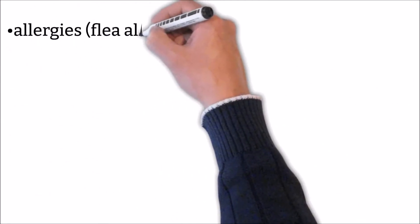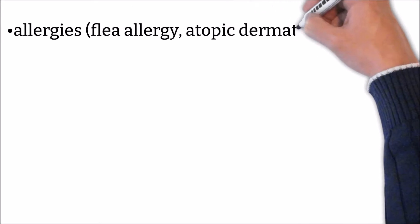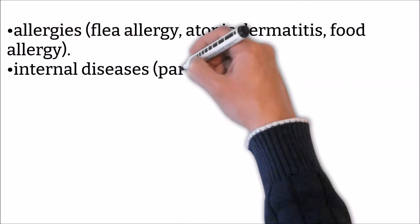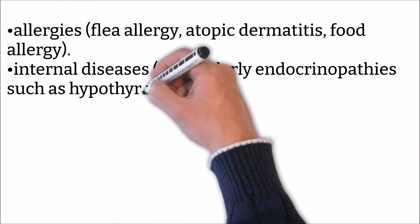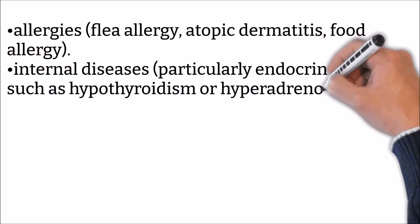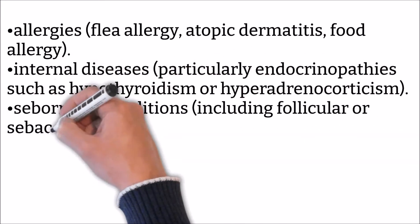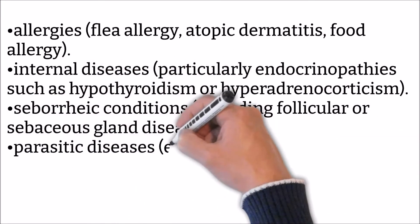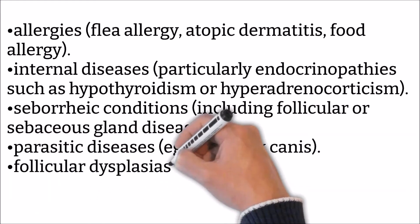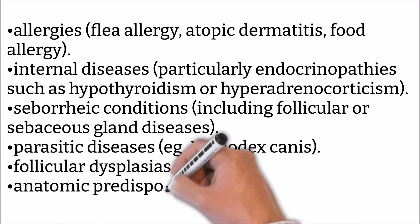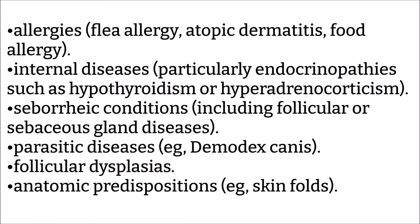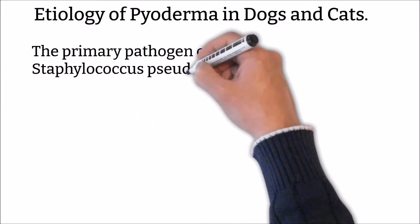Complex infections are associated with underlying diseases such as allergies — flea allergy, atopic dermatitis, food allergy — internal diseases, particularly endocrinopathies such as hypothyroidism or hyperadrenocorticism, seborrheic conditions including follicular or sebaceous gland diseases, parasitic diseases such as Demodex canis, follicular dysplasias, and anatomic predispositions such as skin folds.